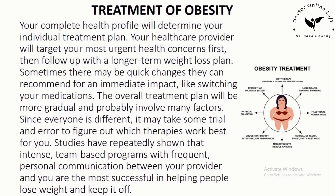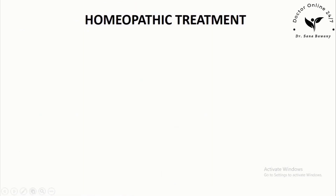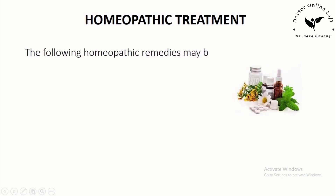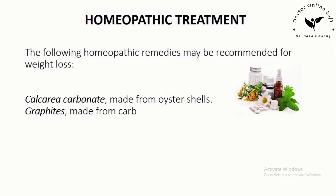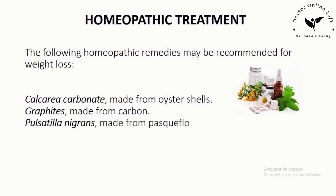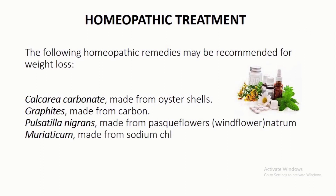Homeopathic Treatment: The following homeopathic remedies may be recommended for weight loss — calcarea carbonate, made from oyster shells; graphites, made from carbon; pulsatilla nigrans, made from passionflowers (windflower); natrum muriaticum, made from sodium chloride; and ignatia, made from the seeds of the St. Ignatius bean tree.